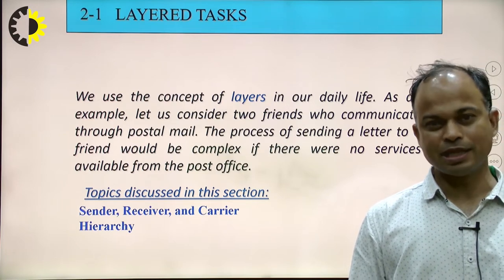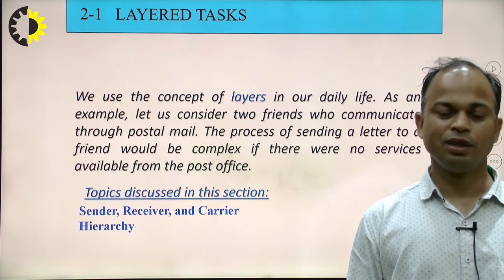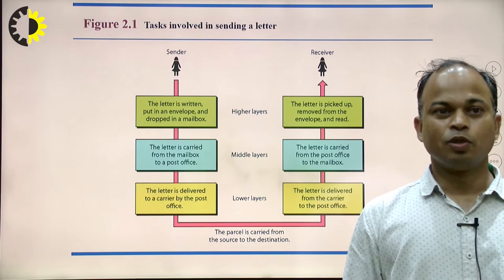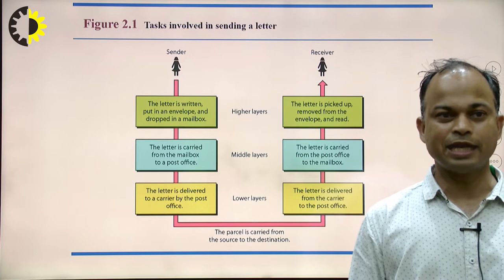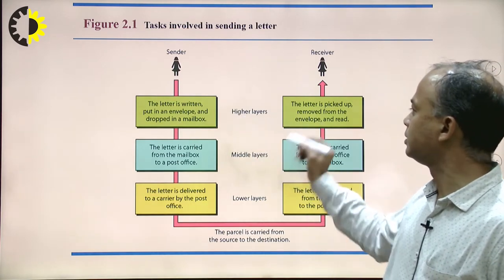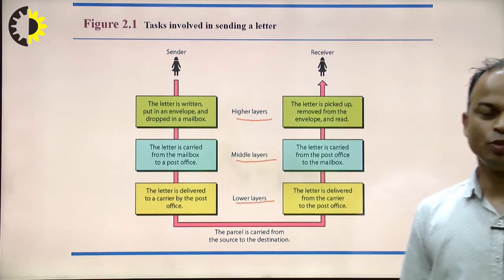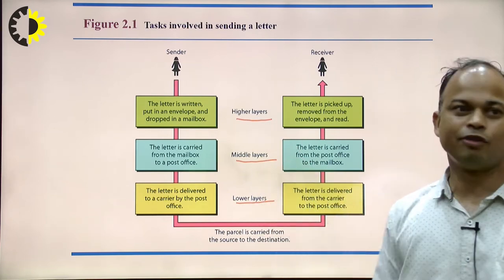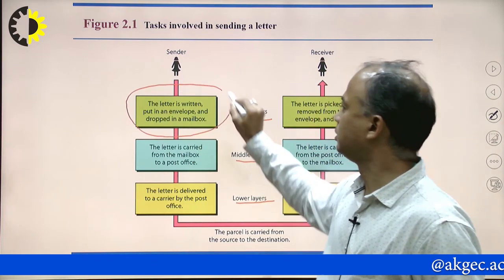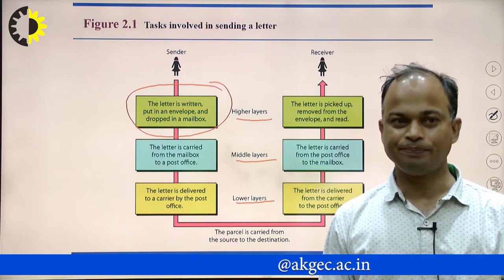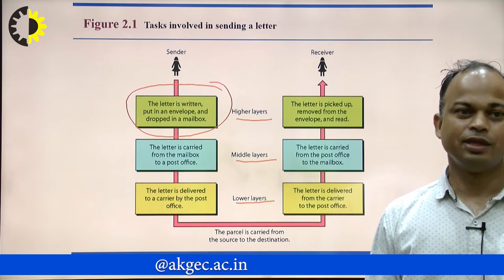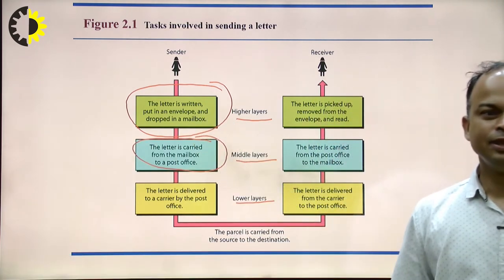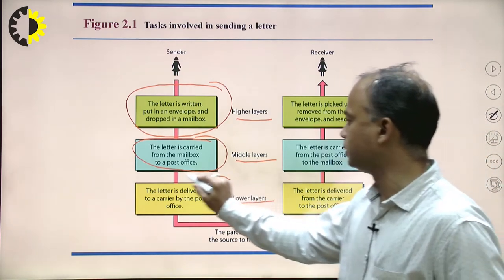In the case of letter post, we have three components: sender, receiver, and post office. The same concepts are implemented in computer networking, in the reference model. We have a sender, a receiver, and in between, a carrier. At the sender, we have higher layers, middle layers, and lower layers. The job of the higher layer is: the letter is written, put in an envelope, and dropped in a mailbox. The letter is then carried from the mailbox to a post office — that is the job of the middle layer. Finally, the letter is delivered to a carrier by the post office — that is the job of the lower layer.